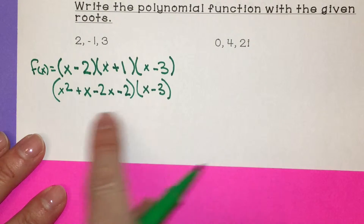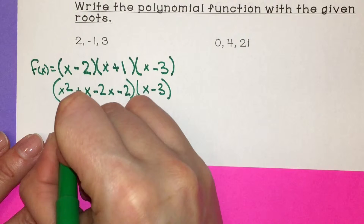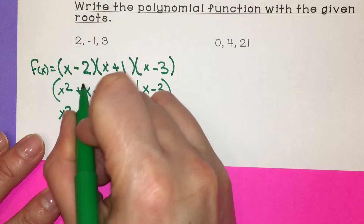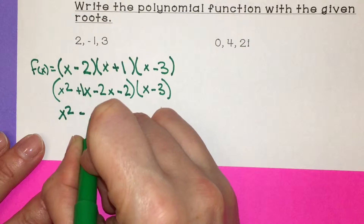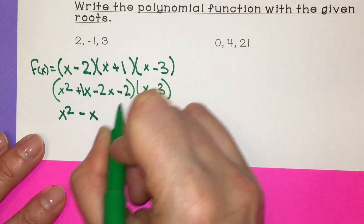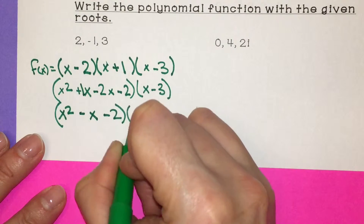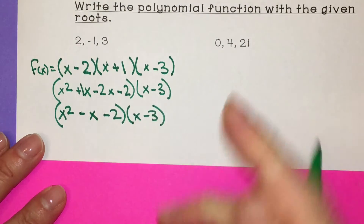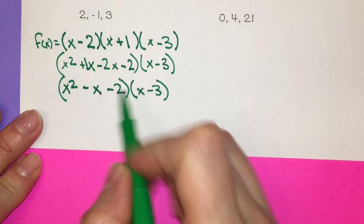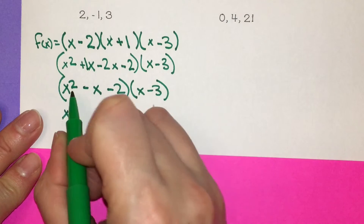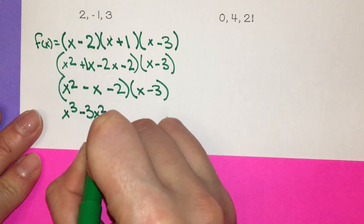Before multiplying by the last parentheses, I'll simplify by combining like terms. We have x squared, positive x minus 2x is negative x, minus 2. Now I multiply by x minus 3: x squared times x gives x cubed, x squared times negative 3 gives negative 3x squared.